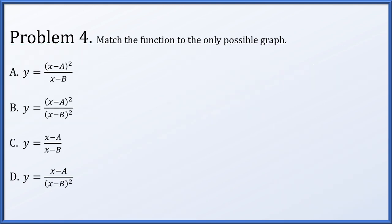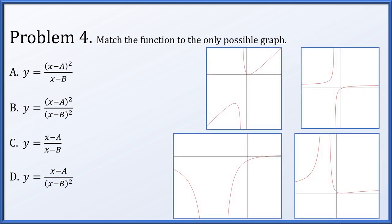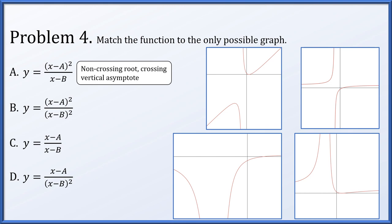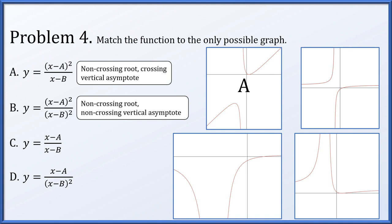In problem 4, we want to match four functions to four graphs where basically nothing is labeled. We'll determine which are crossing versus non-crossing roots and asymptotes. In option A, x = a is a root of the numerator of degree 2, so it has a single non-crossing root. Its denominator is degree 1, so it has a single crossing asymptote. We're looking for a graph with a non-crossing root and a crossing vertical asymptote — that's the one in the upper left. In part B, we're looking for a non-crossing root and a non-crossing vertical asymptote, since both numerator and denominator have roots of degree 2. The only option is in the bottom right.